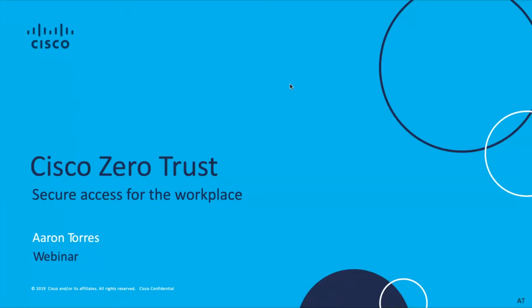My name is Aaron Torres. I'm a cybersecurity architect, also known as the janitor, father, husband, whatever else you want to call me. I've been with Cisco roughly about six years. I really enjoy working for Cisco, primarily because they have allowed me to understand that security really is more than just one product — more than just a firewall. They've really opened my mind and allowed me to evangelize the models we use here at Cisco from a security perspective, covering multiple areas: inside a network, input, devices, and so on.